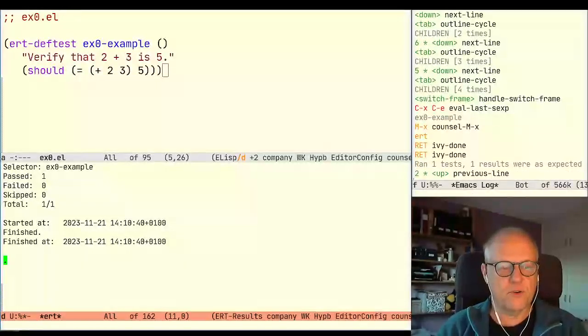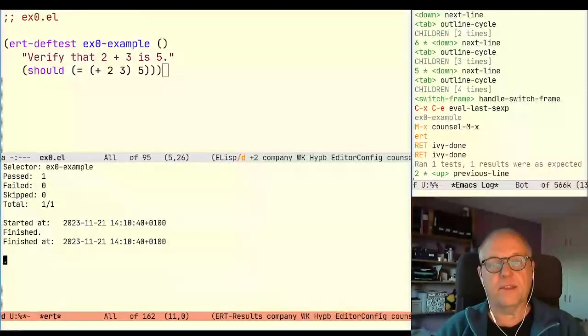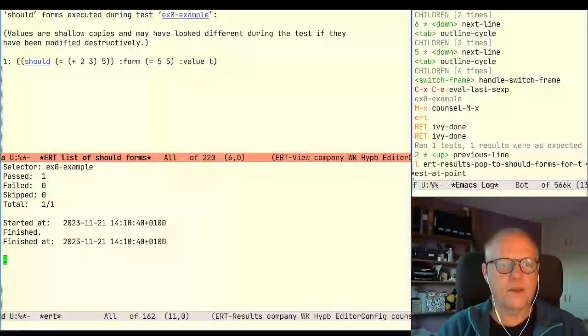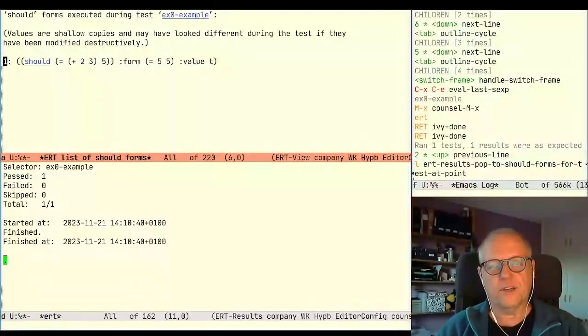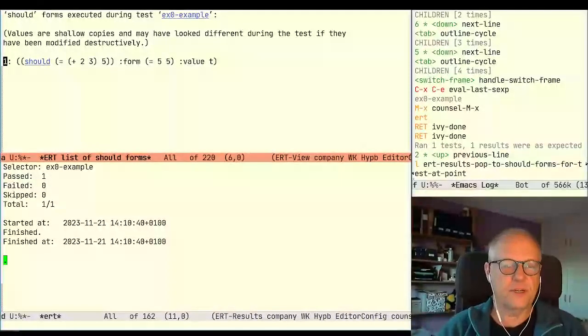You also see this green mark here indicating one test case and that it was successful. For inspecting the test we can hit the letter L which shows all the should forms that was executed during this test case. So here we see that we have one should executed and we see the form equals to two and it was five equals to five. So a good example of a successful test case.